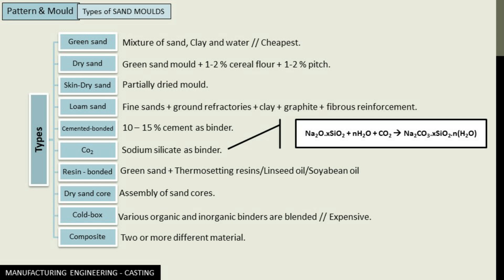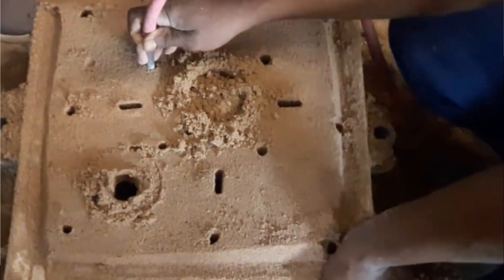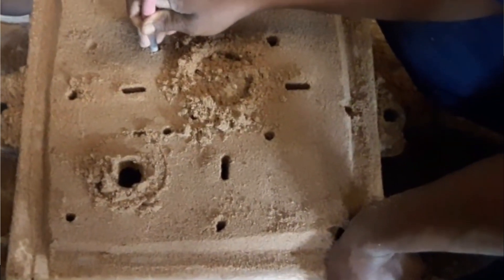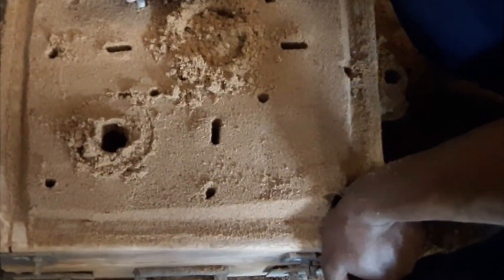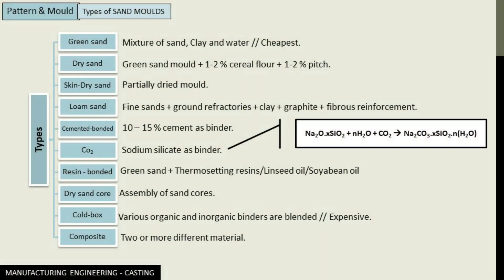Next we have CO2 mold. The CO2 molding process is a sand molding process in which sodium silicate, that is Na2O·xSiO2 or water glass, is used as a binder rather than the clay. After the mold is made, carbon dioxide gas is made to flow through the mold and the sand mixture hardens by the reaction shown here.